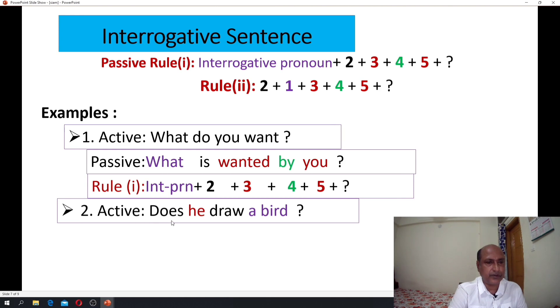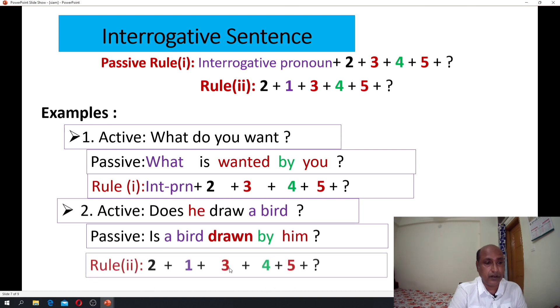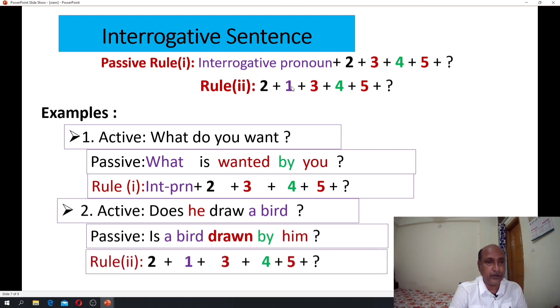Number two, active voice: does he draw a bird? Passive: is a bird drawn by him? Okay, rule number two. Be verb is, a bird object-subject, and three is main verb past participle drawn. Four, peer position. Five, subject-object, he becomes him. Okay, that's okay for interrogative sentence.